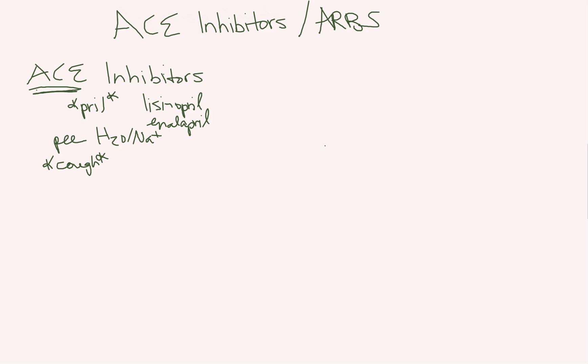So those are the keys for ACE inhibitors. They end in pril, because pril, pril, I have an ACE. They make you pee out your sodium and water, because your person on the other team keeps getting up to pee a million times. And they end up causing an annoying cough. He has an ACE.